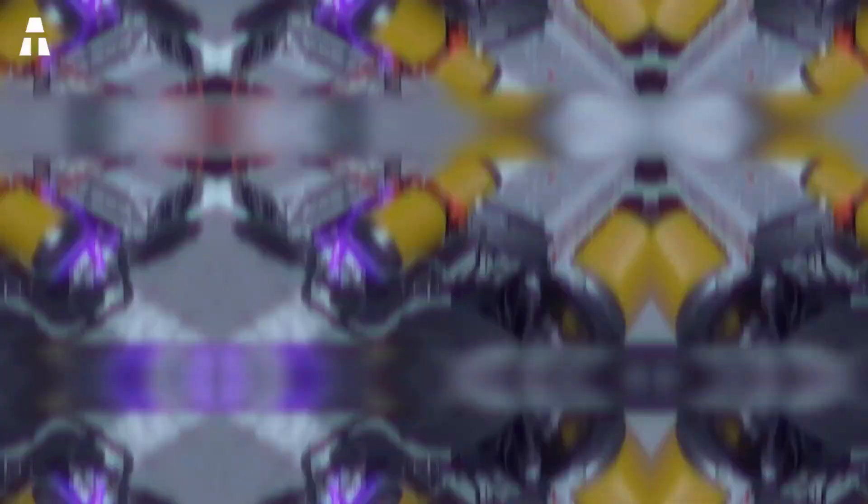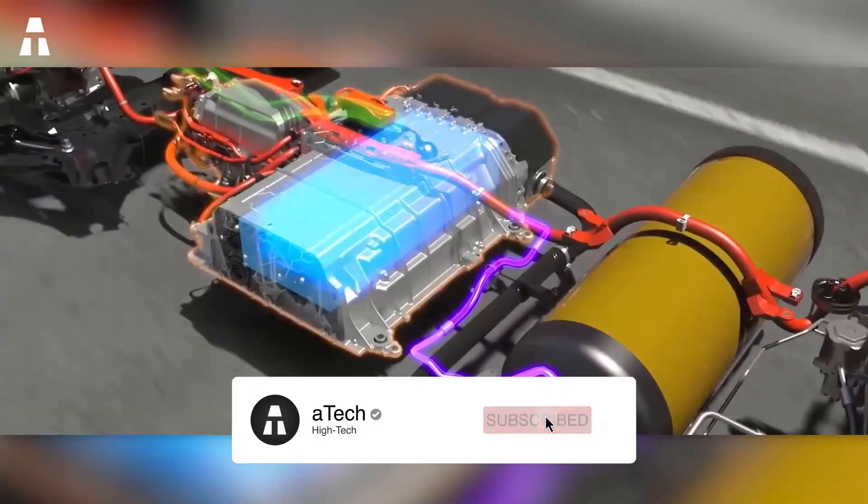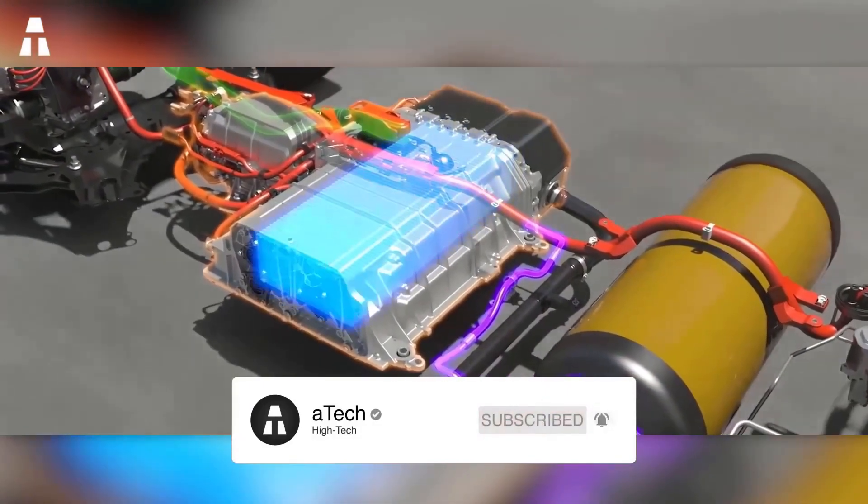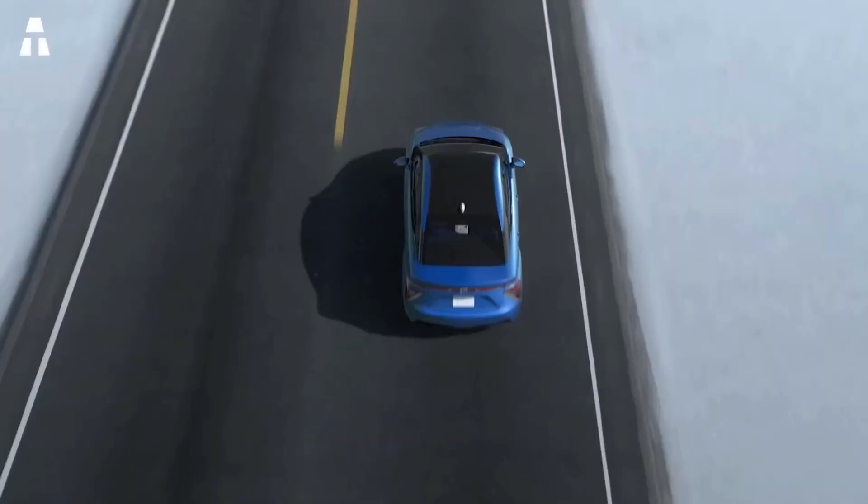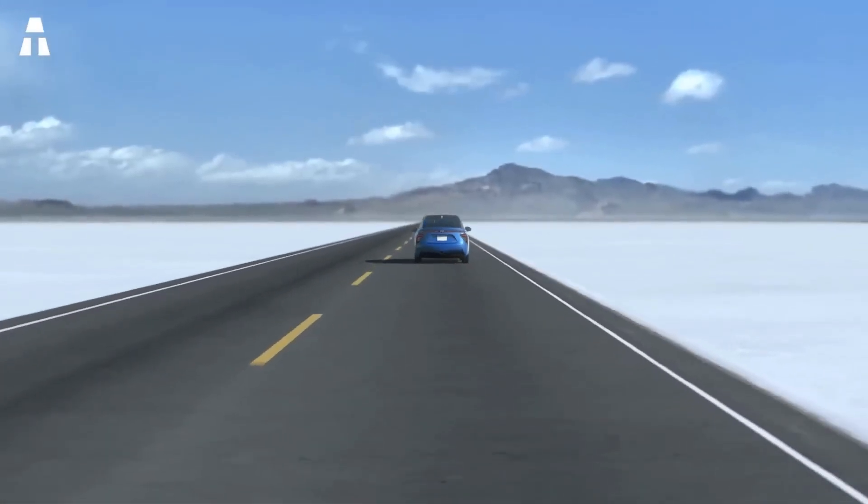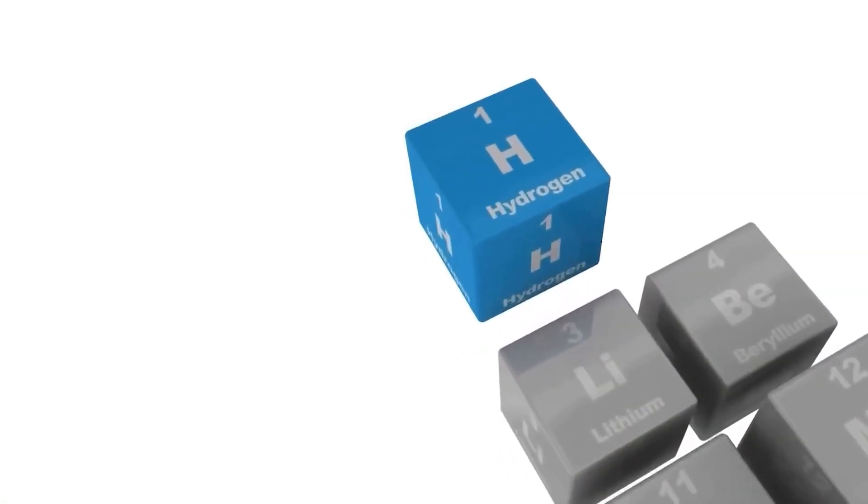The hydrogen car is equipped with an innovation tank that is supplied with 700 bar of pressure. This tank feeds fuel cells, which convert hydrogen into electricity. This, in turn, powers an electric motor that propels the car.